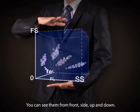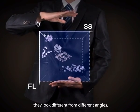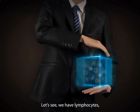You can see them from the front, side, up, and down. They look different from different angles, and all the cells are anchored to their seats.